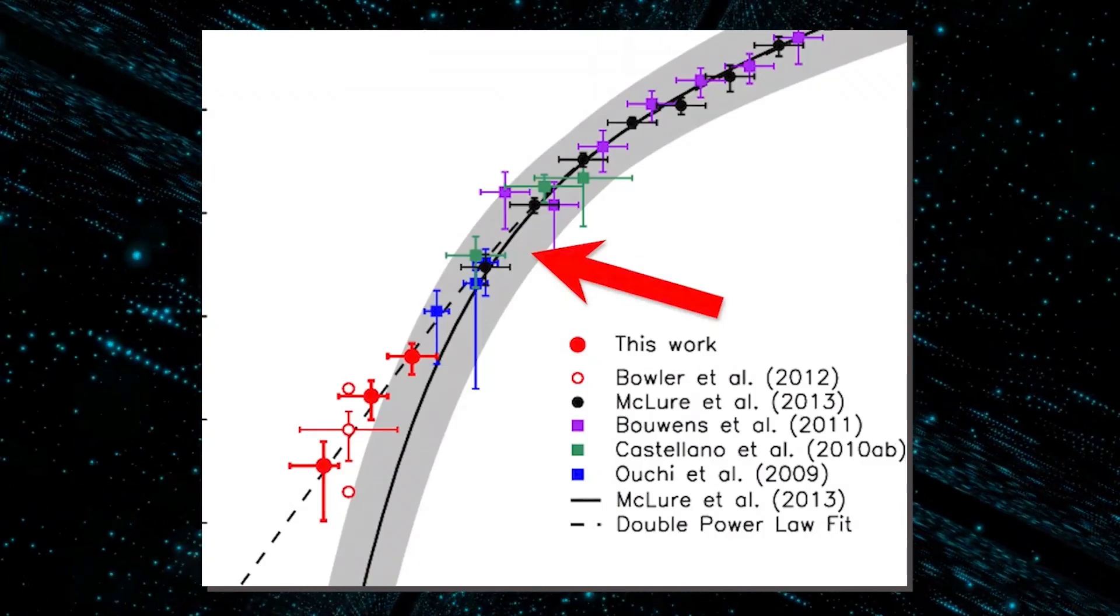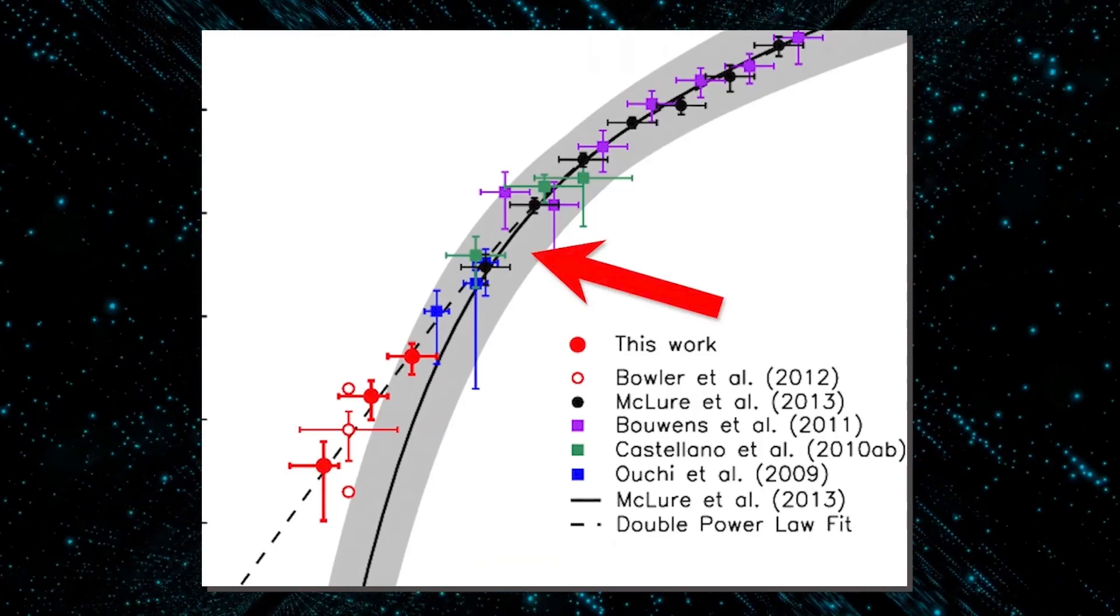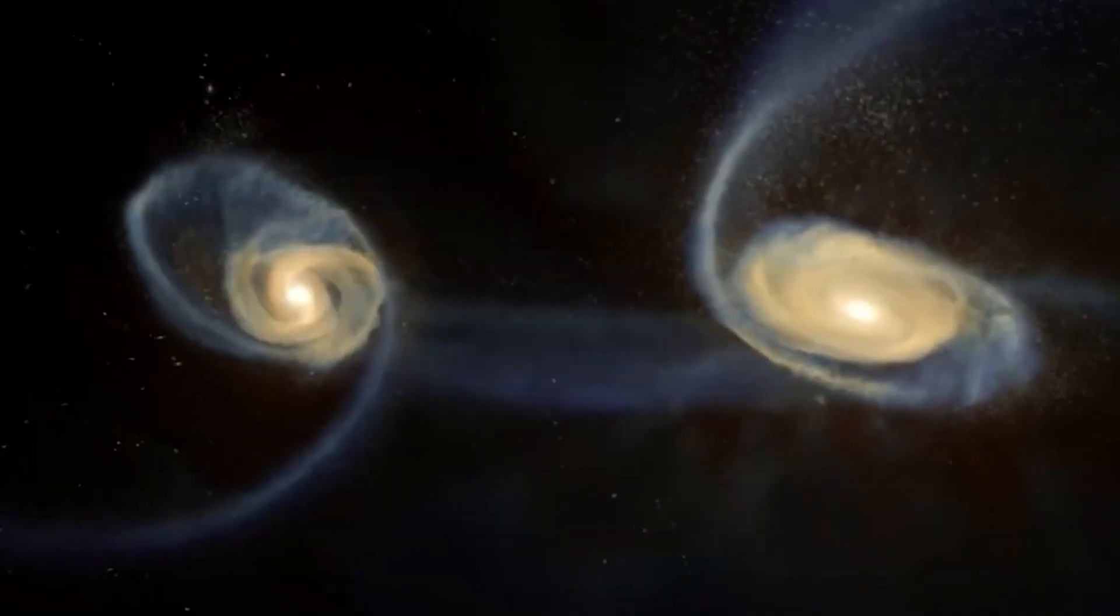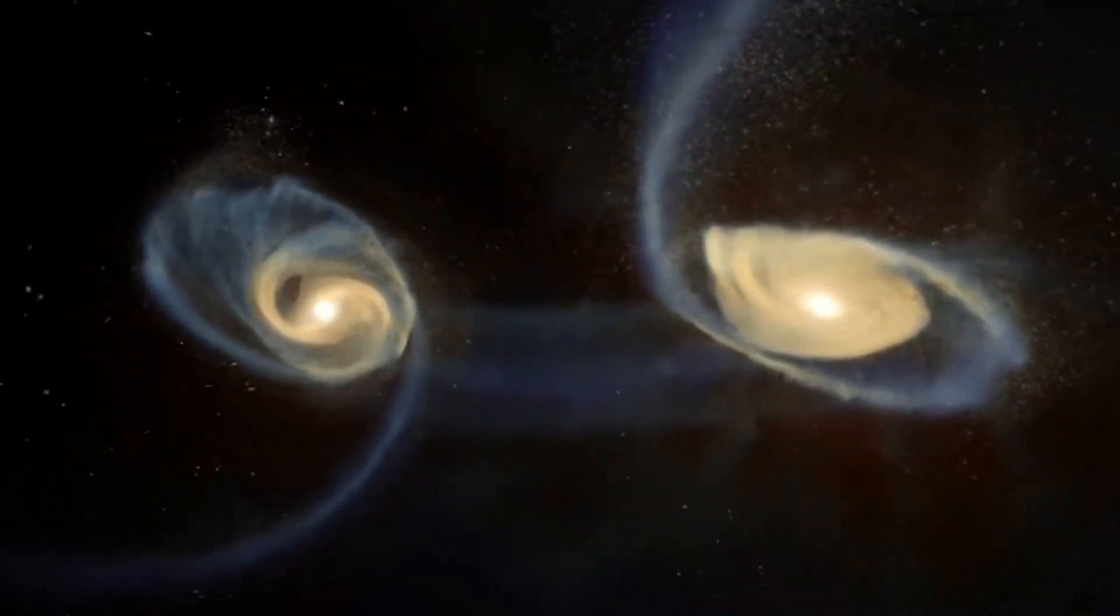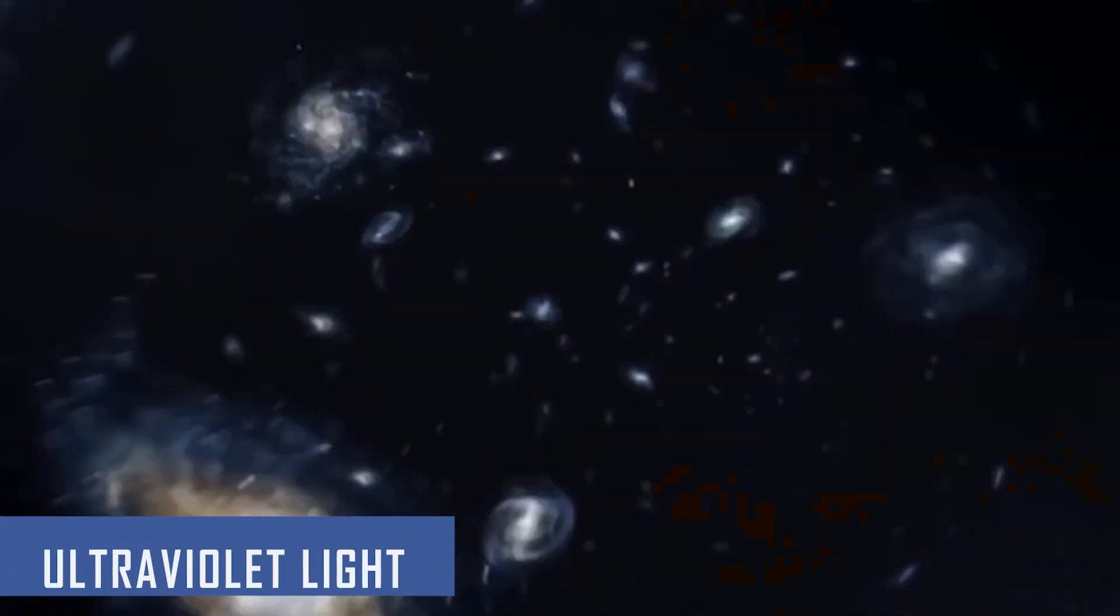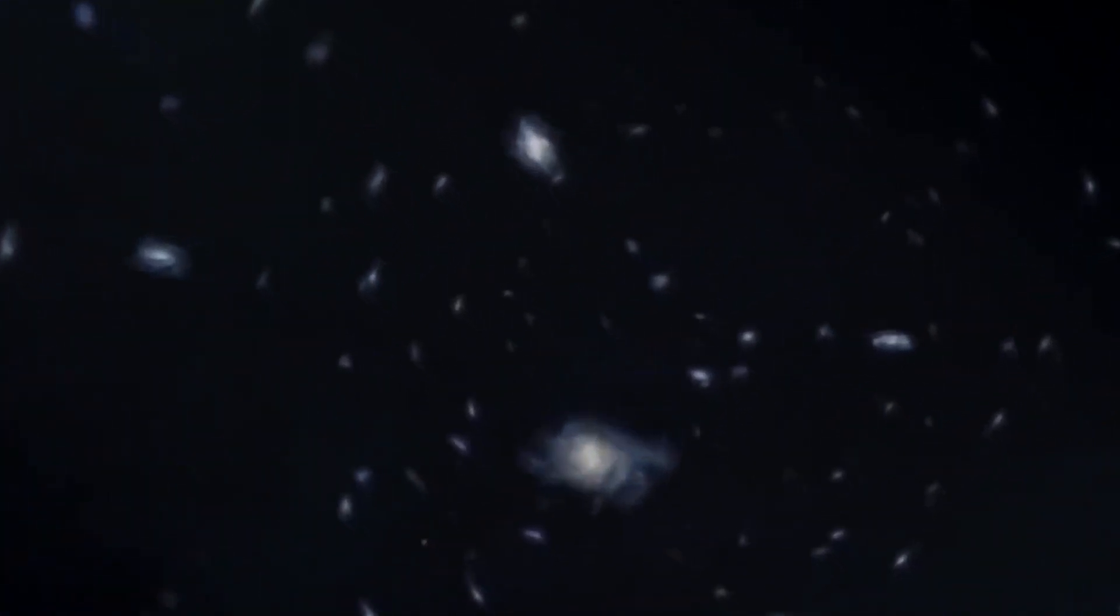Doonan's group computes the galaxy UV luminosity function between redshifts of 8 and 15 in their paper. Because a galaxy releases more ultraviolet light than hotter young stars form, this is a process approximating star formation. The amount of ultraviolet light emitted by galaxies at any given moment is averaged using this function.